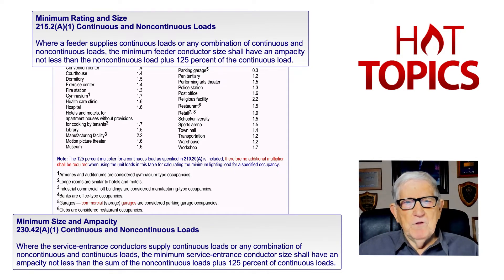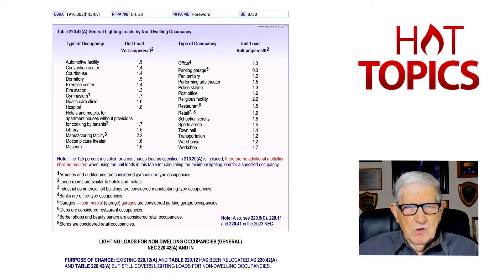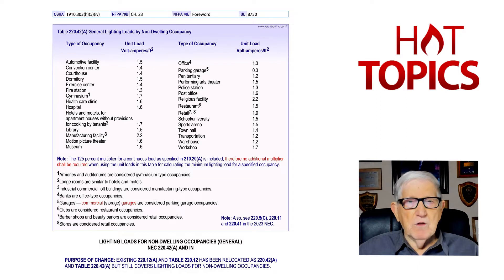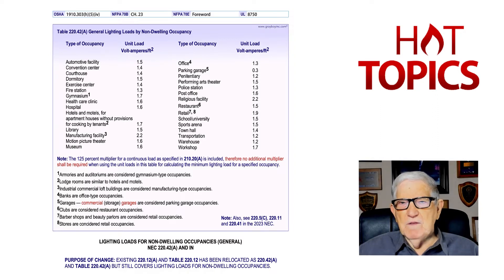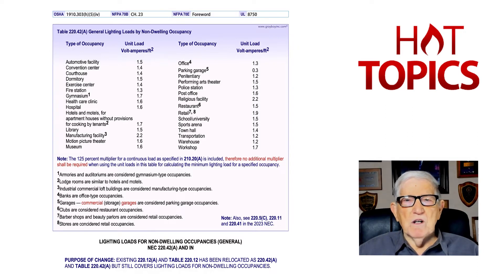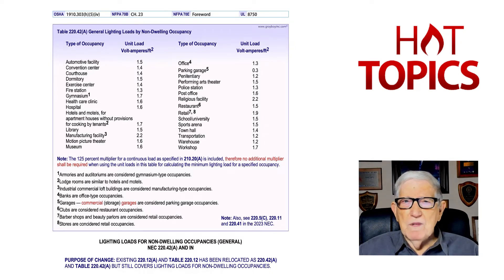If you take a look at a store building and drop down to number eight below the table — that used to be H, now it's eight — stores are considered retail occupancies. You would go over to retail occupancies, and notice that's 1.9 VA per square foot, which used to be three. They've reduced these VA ratings tremendously.